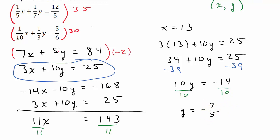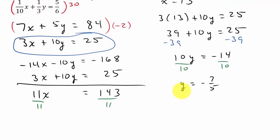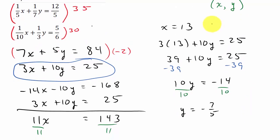Alright. So there's my y value, negative 7 fifths. So my solution, here we go. Let's write it here. I'll write my solution here. It's going to be (13, negative 7 fifths). Okay. And I hope that video helped. Give me a like, share, and subscribe. And thanks for watching.